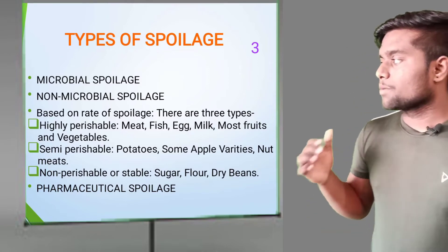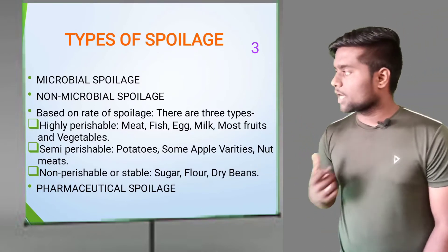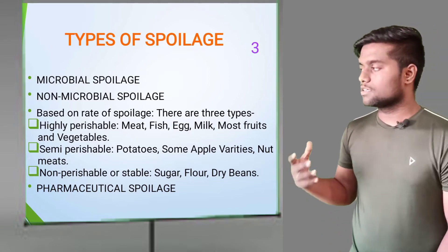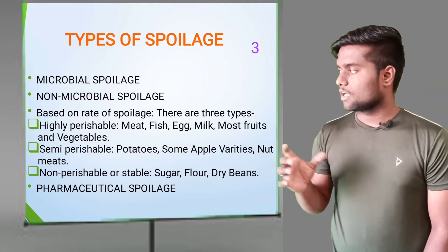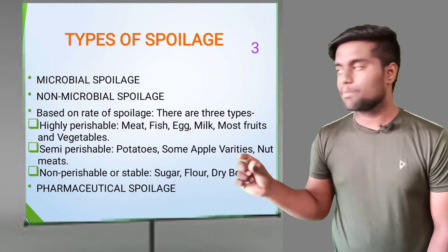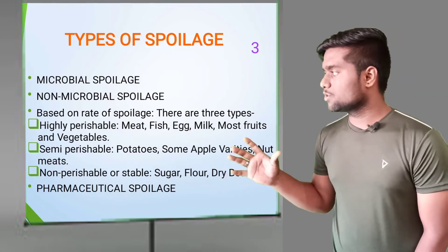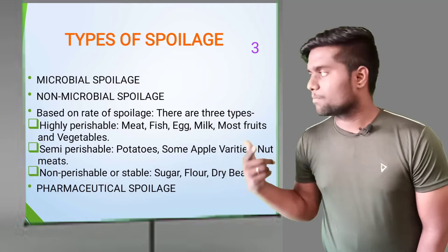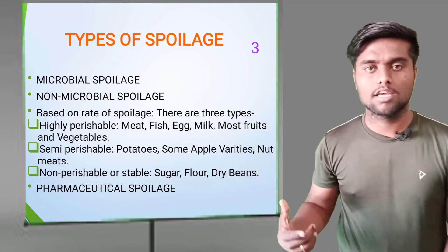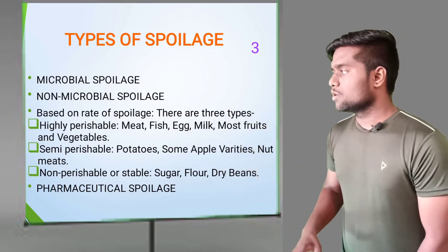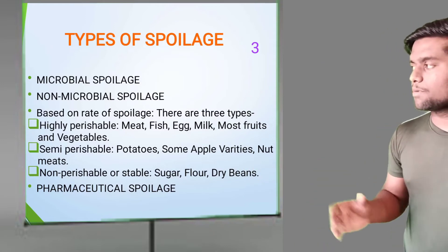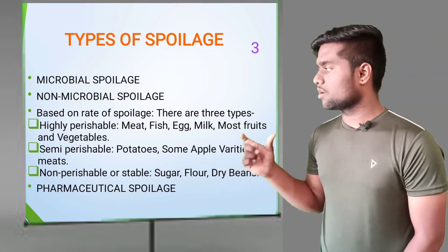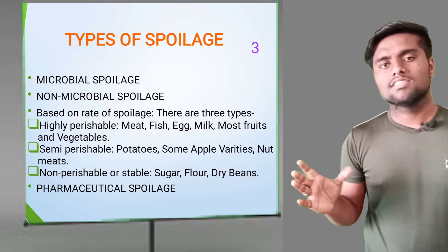After that, we have semi-perishable products, like potatoes, apples, vegetables, and nuts. Then we have non-perishable and stable products, like sugar, flour, and dry beans. These are the most stable and have the least spoilage.